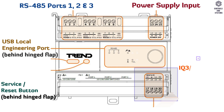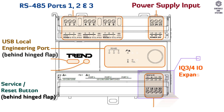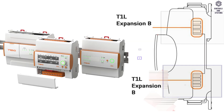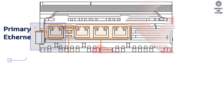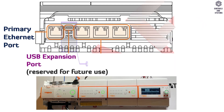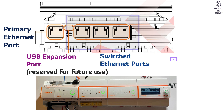Terminals 17–20 are IQ3 or IQ4 input-output expansion bus. This is the T1L expansion bus port, this is the primary Ethernet port, this is the USB expansion port, and this is the switched Ethernet ports.